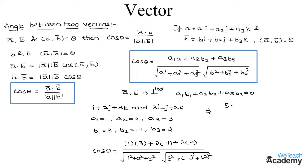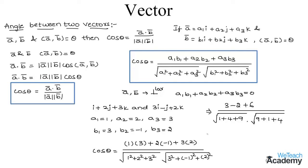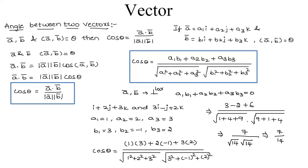This gives us 3 + (−2) + 6 in the numerator. In the denominator, we have the square root of (1 + 4 + 9) into the square root of (9 + 1 + 4), which is root 14 into root 14. So this comes to 7 divided by 14, and on simplifying we get 1/2 as the value of cos theta.